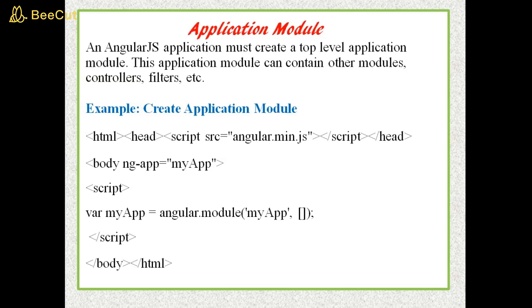The second parameter is an array of other dependent modules. In this example, we are passing an empty array because there is no dependency.